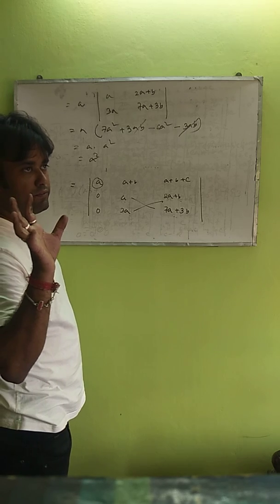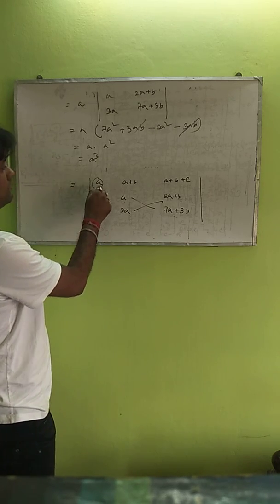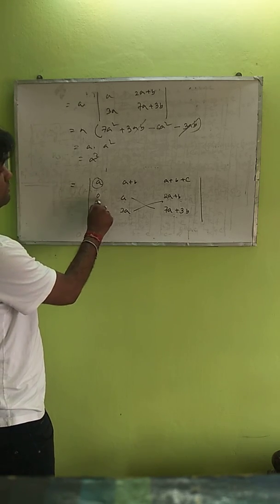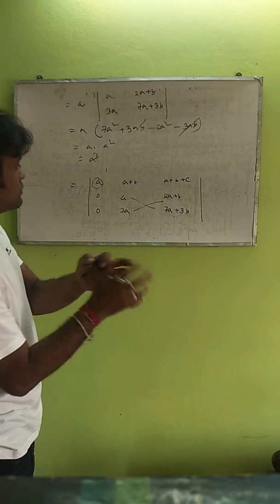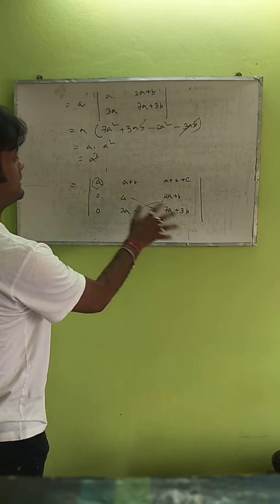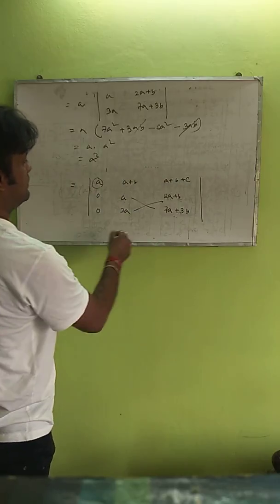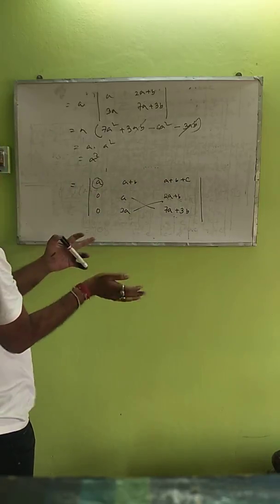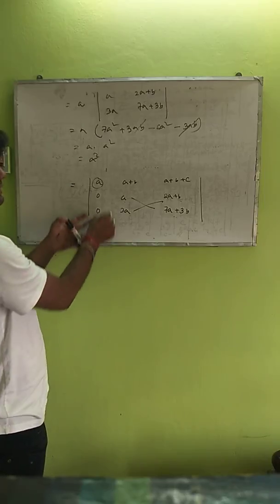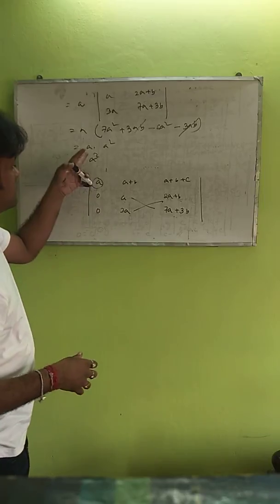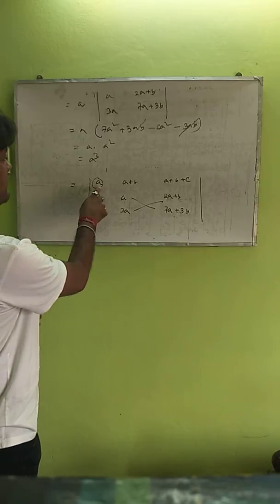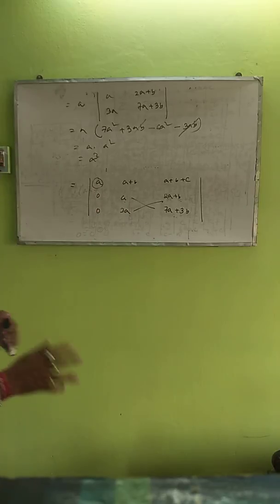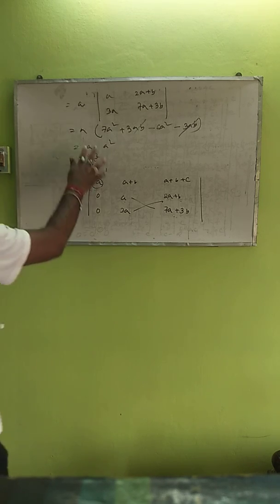You may face the problem that we are used to expanding the determinant with the first row, but here the first column has 0 and 0, so it is very easy for us to expand the determinant with respect to the first column. This makes the calculation straightforward.